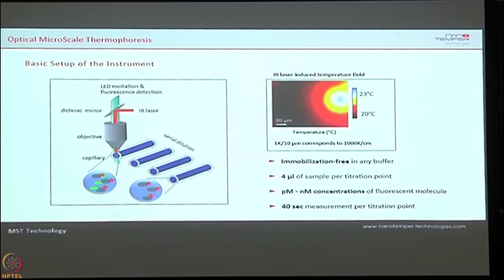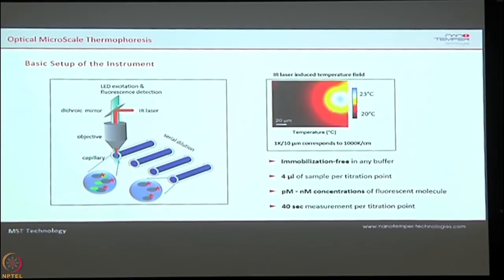With this basic principle, we built an instrument with two important components: a laser which creates the temperature gradient for thermophoresis, and a fluorescent detection unit, since one of the binding partners is fluorescently labeled. The biggest advantage is that you are not immobilizing anything, as in other techniques. You directly determine the binding affinity in buffer, requiring only 4 to 5 microliters of sample. You perform a dilution series of 12 to 16 dilutions, each taking 40 seconds to scan.